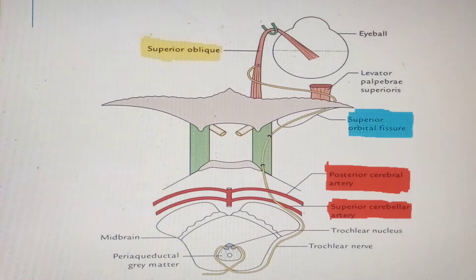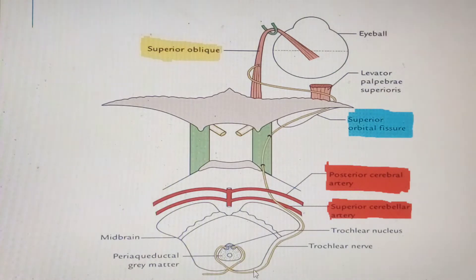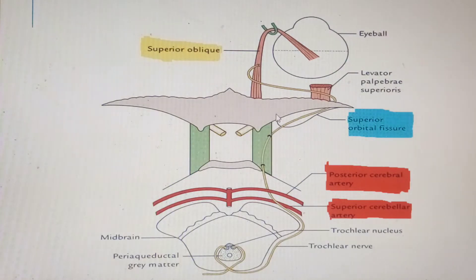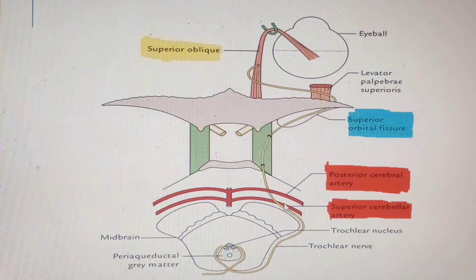This is why the trochlear nerve has the longest intracranial course of all cranial nerves — it has to wind all the way from the dorsal aspect before heading to the orbit. Once it comes out of the midbrain, it also has the same vascular relations as the oculomotor nerve.